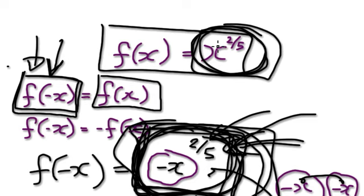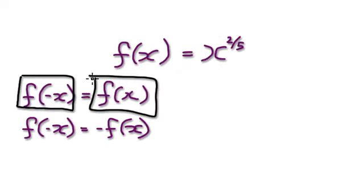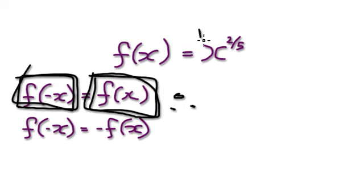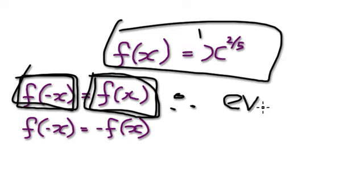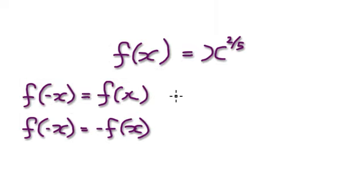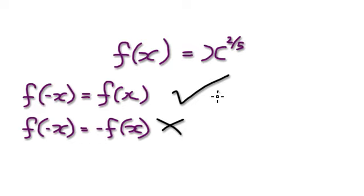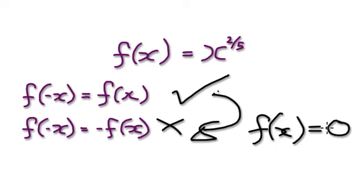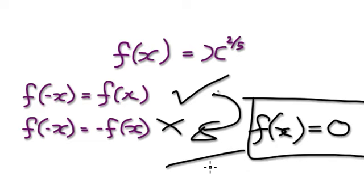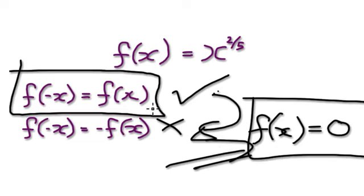This is in fact the same as the original. Therefore, f of minus x equals f of x. If this equals this, then therefore this function is even. So this is even. I'm not going to bother checking the odd, because if it's an even function, then it cannot be an odd function — unless it's that special case of f of x equals zero. If it's an even function, the chances are it's not going to be an odd function.